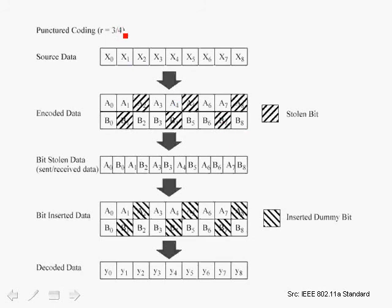In puncturing for three-quarter rate, certain bits are stolen — meaning we toss them away and line up the remaining bits right after each other. So we have bit A0, B0, A1, but there is no B1; we skip to B2, so B1 is eliminated. Similarly, we have A1, B2, and then no A2 — A2 was eliminated. This string of bits is composed of the original bits without the stolen bits.